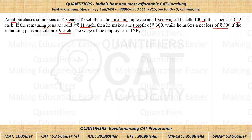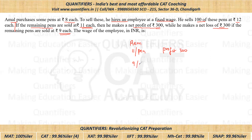Now this is something very important. If the remaining pens are sold at 11 rupees, there is a net profit of 300. If he sells the remaining pens at 9 rupees, then there is a net loss of 300. Just see the overall difference in the profit and loss — overall there will be a difference of 600 rupees.